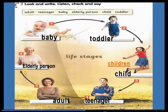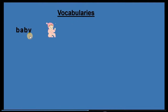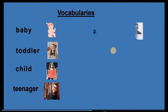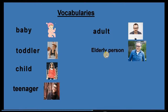Number six: elderly person — the old people, like your grandmother and grandfather. These are the main vocabulary items you will study and keep in your memory: baby, toddler, child, teenager, adult, elderly person.